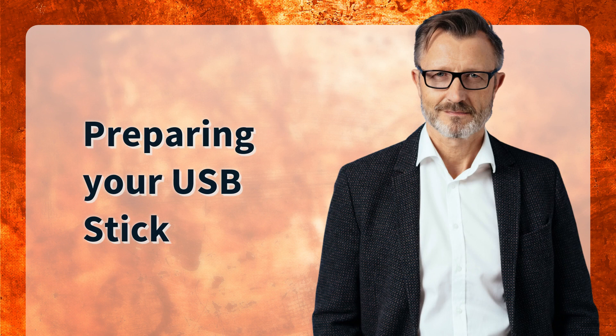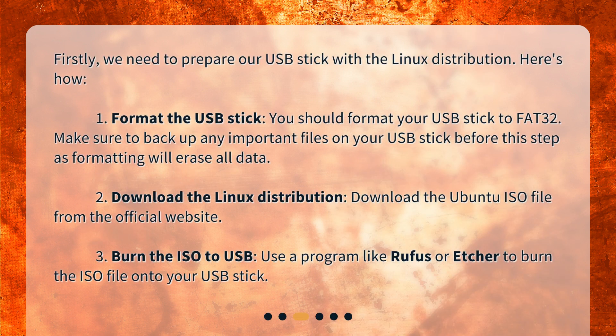Preparing your USB Stick. First, we need to prepare our USB stick with the Linux distribution. Here's how. 1. Format the USB stick — format your USB stick to FAT32. Make sure to back up any important files before this step, as formatting will erase all data. 2. Download the Linux distribution — download the Ubuntu ISO file from the official website. 3. Burn the ISO to USB — use a program like Rufus or Etcher to burn the ISO file onto your USB stick.